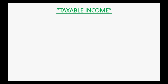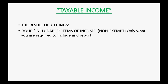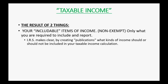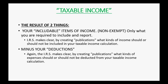You would only want to consider taxable income for those calculations. Taxable income is the result of two things: your includable items of income, which are called non-exempt income — only what you are required to include and report. The IRS makes clear through publications what kinds of income should or should not be included in your taxable income calculation.